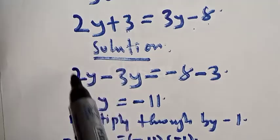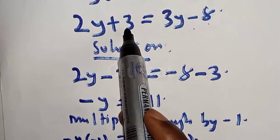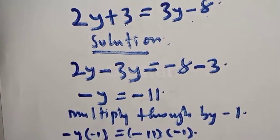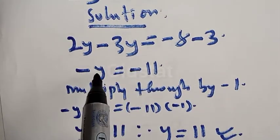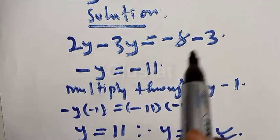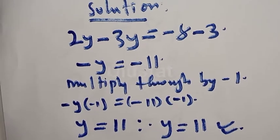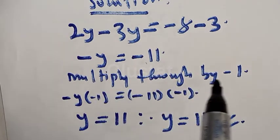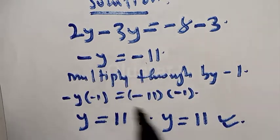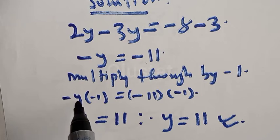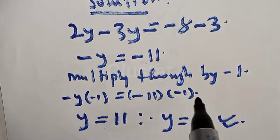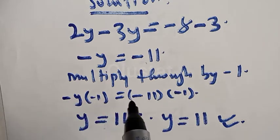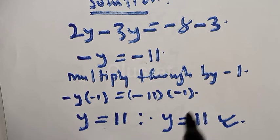The plus 3y, if it comes to the other side, it will be minus 3y. Then this plus 3, if it comes to the other side, it will be minus 3. So we have 2y minus 3y equal to minus 8 minus 3, which is the same as minus 11. Now we multiply through by minus 1 to eradicate the negative: minus y times minus 1 equals minus 11 times minus 1, giving us y equal to 11.